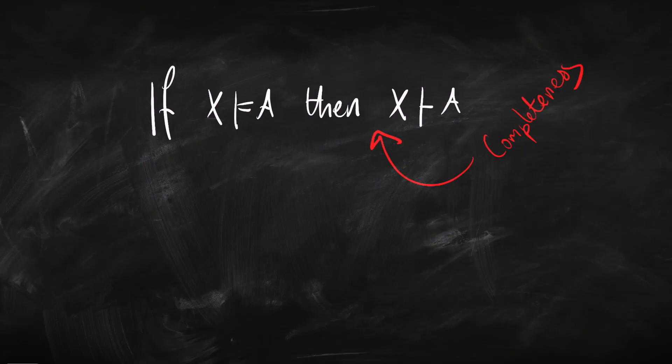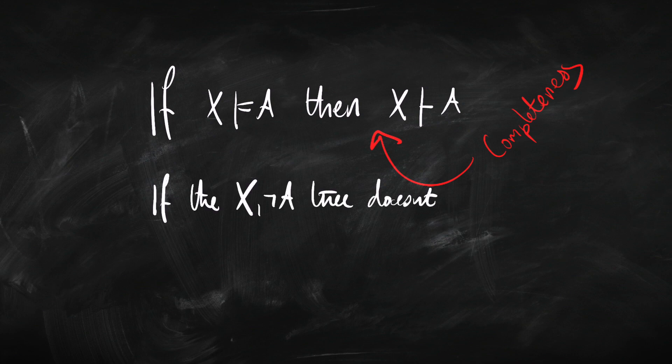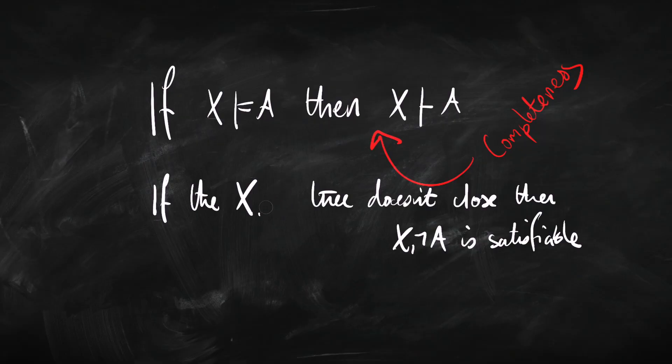As a special case, we list out premises and the negation of the conclusion, and that's telling us about the entailment or not from premises to conclusion. Similarly, for completeness, going through the same steps, we get: if the tree doesn't close, then the sentences at the top are satisfiable. We can generalize: for any set of sentences, if the tree starting with those sentences doesn't close, then that set of sentences is satisfiable.